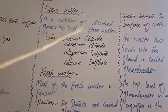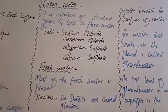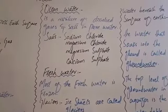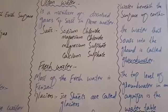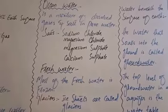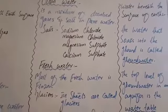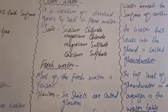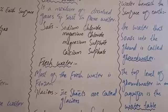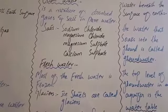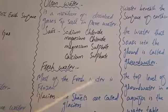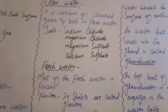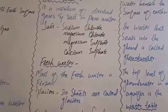Now, water beneath the surface of the earth — what happens to rain when it falls? Rain water can evaporate or run off, and some soaks into the ground through the surface of the soil. The water that is soaked into the ground is called ground water. The top level of ground water in an aquifer is called the water table.